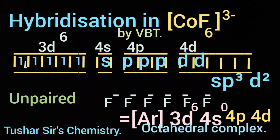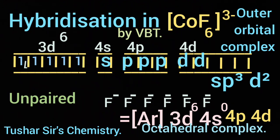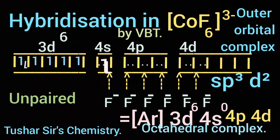As 4d is involved over here, it is an outer orbital complex. And each F⁻ will provide 2 electrons to vacant hybrid orbitals of Co³⁺ as shown.